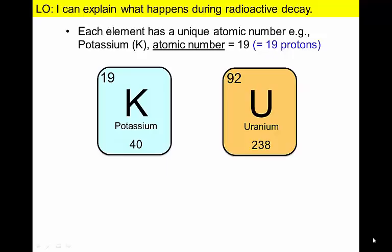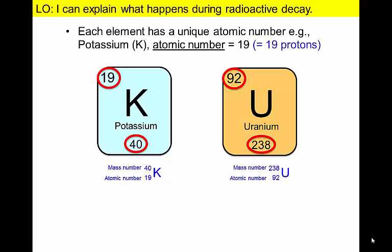Before we discuss radioactive decay, let's recap some information about elements. Every element has a unique atomic number, represented by how many protons are present in its nucleus. For example, potassium has 19 protons and uranium has 92 protons. Almost all elements also have neutrons in their nuclei. The total number of neutrons and protons is the mass number of an element. While the number of protons stays constant, the number of neutrons may vary.